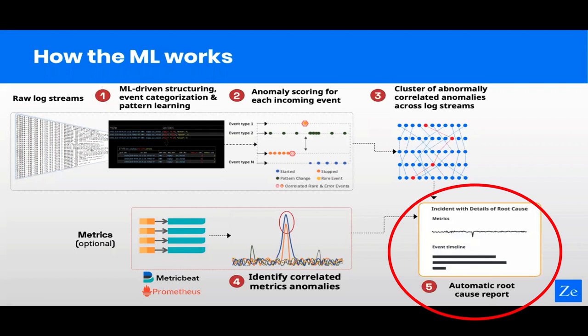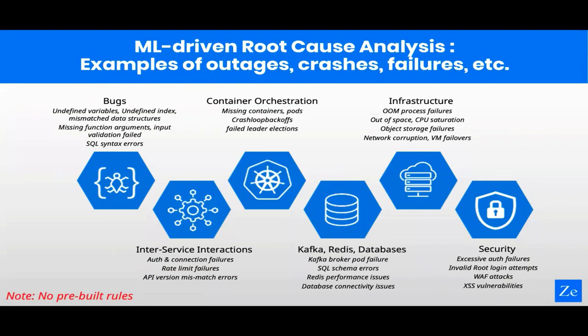All of this is wrapped up into an automatic root cause report that you can see either inside your incident management tool or inside the Zebrium UI. Our ML is able to detect a very broad range of root causes for a very broad range of problems. This chart shows examples of things it's managed to find root cause for — and importantly, there were no rules or any pre-definition of these problem types whatsoever. They were picked up because they had the patterns of clusters of anomalies across different log streams. It helps automatically uncover root cause without you having to go hunting through logs.